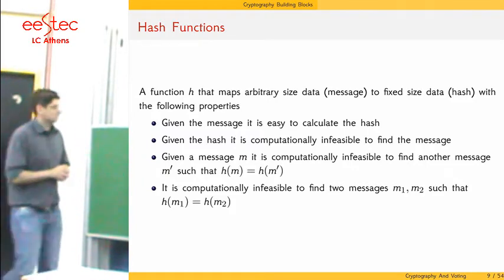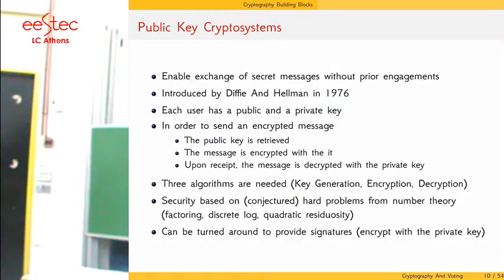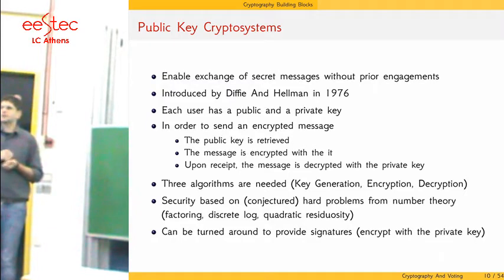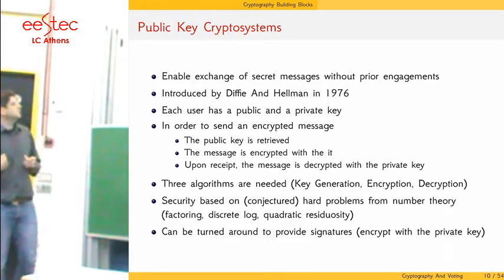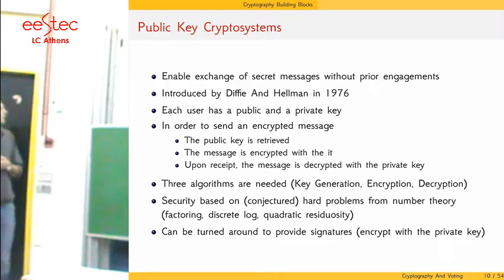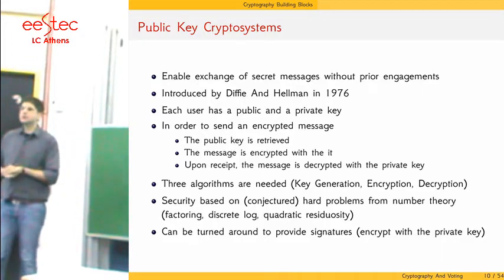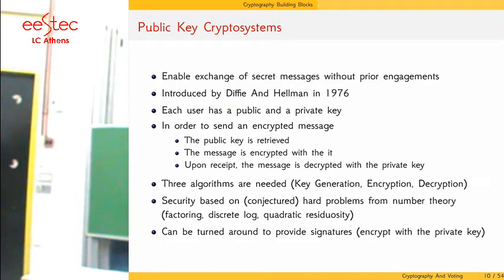Another very important cryptographic tool is public key cryptosystems. Public key cryptosystems solved the millennial problem of how to communicate securely with somebody you have never met — and it happened in 1976. Each user has a public and private key. To send an encrypted message, we retrieve the user's public key, encrypt our message with it, and send it; the user decrypts it with their private key. These systems can also be turned around to provide signatures by encrypting with the private key. Security is based on computationally hard problems such as factoring, computing the discrete log, and quadratic residuosity.